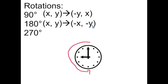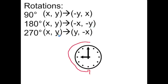And finally, for our 270 degree rotation counter-clockwise, we'll have our x and y coordinates, and then we'll switch their locations and change the sign of the x. Let me go ahead and do a quick little demo.